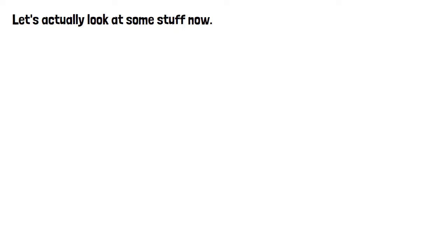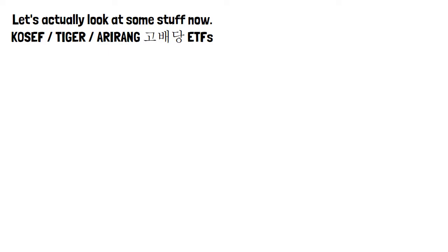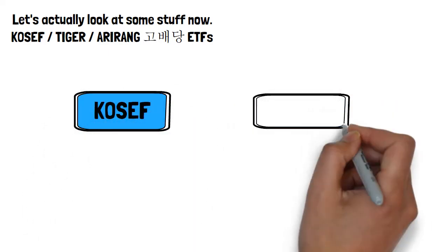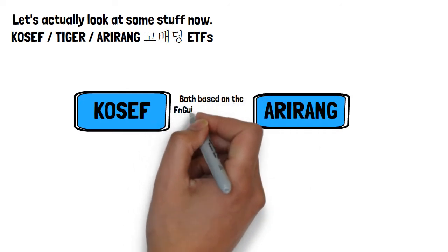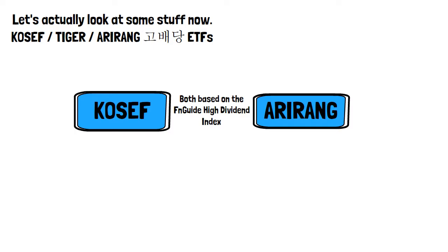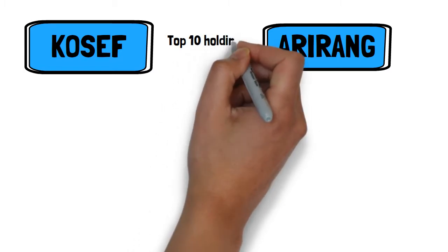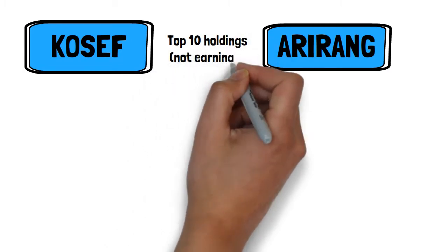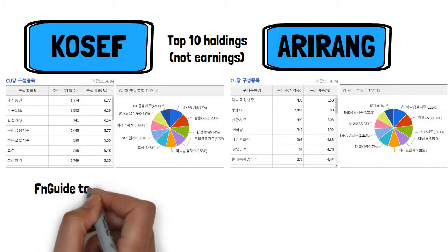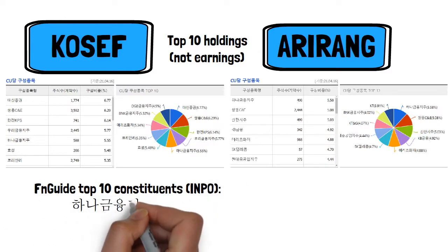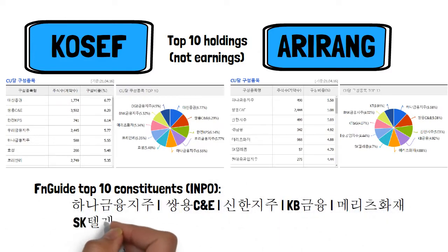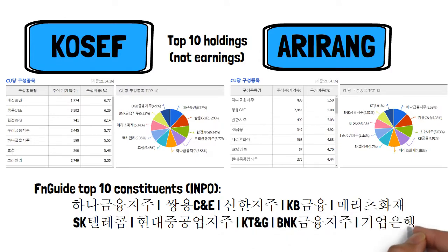To get a better understanding of this, let's look at some dividend ETFs and see what they're holding currently. Three we'll be looking at today are the Kosef, Tiger, and Arirang Kopedang ETFs. The Kosef and Arirang base their holdings on the FN Guide Dividend Stock Index, which bases its strategy around predicted dividend yields of companies within the top 200 market cap companies on the market. Comparing the top 10 holdings of the Arirang and Kosef ETFs with the FN Guide Kopedang top 10 constituents, we see significant overlap — specifically two telecoms, four banks, Hyundai Heavy Holdings, KT&G, and two companies known for consistently high dividend yields: Sangyong C&E and Merits Fire and Marine Insurance.